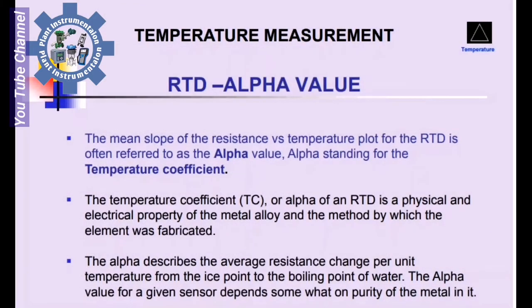RTD Alpha Value: The mean slope of the resistance versus temperature plot of the RTD is often referred to as the alpha value. Alpha stands for the temperature coefficient. The temperature coefficient, Tc or alpha, of an RTD is a physical and electrical property of the material alloy and the method by which the element was fabricated.